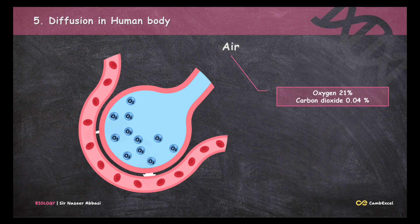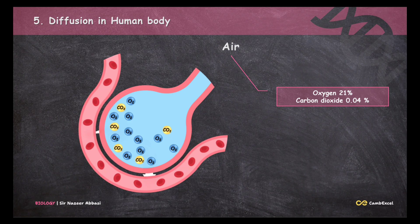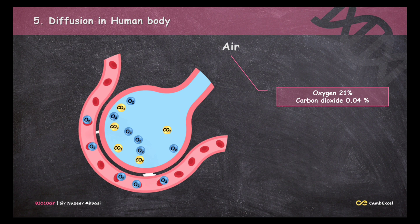The alveoli are surrounded by blood capillaries. This blood contains a lot of carbon dioxide, which is a waste gas that the body needs to expel. There is a clear concentration gradient: carbon dioxide is at higher concentration in the blood than in the alveolar space, so it diffuses from the blood into the alveolar space. Meanwhile, oxygen is at higher concentration in the alveolar space and at lower concentration in the blood capillary, so oxygen diffuses from the alveolar space into the blood. This is how gas exchange is made possible in the alveoli.